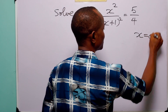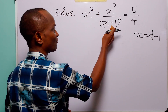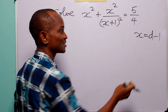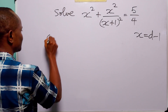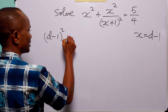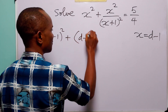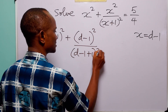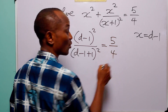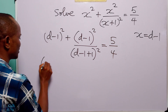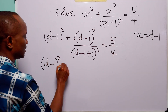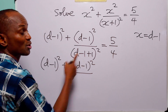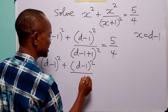Let x be equal to d minus 1. This substitution will take care of the polynomial in the denominator. When we rewrite the original equation in terms of d, we get d minus 1 squared plus d minus 1 squared divided by d squared — since d minus 1 plus 1 equals d — and this is still equal to 5 over 4.